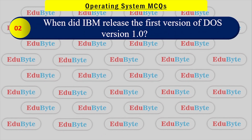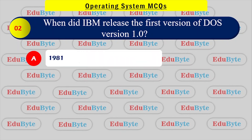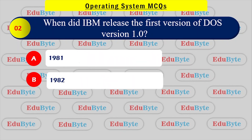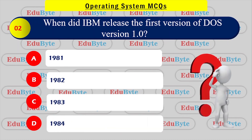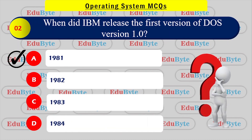When did IBM release the first version of DOS version 1.0? The options are: Option A - 1981, Option B - 1982, Option C - 1983, Option D - 1984. The correct answer is 1981.